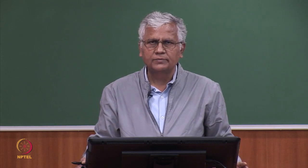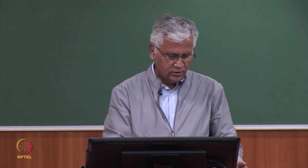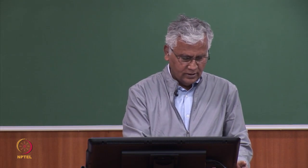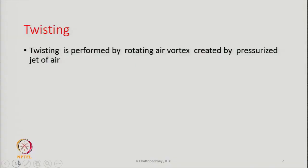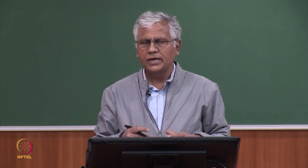Today we are going to discuss yarn formation mechanism in air jet spinning. Yarn formation basically means some kind of twisting arrangement has to be there — there has to be a twister. Here the twisting is performed by a rotating air vortex, and this vortex is created by a pressurized jet of air, hence the name air jet spinning.